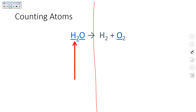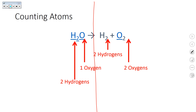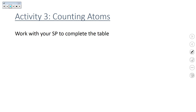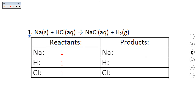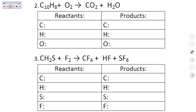For H2O: we count two hydrogens and one oxygen on the reactant side. On the product side, we have two hydrogens and two oxygens. For activity 3, go ahead and press pause on this video and complete it, then come back to check your answers. For the first equation: reactant side — one sodium, one H, one Cl. Product side — one sodium, two hydrogens, one chlorine. For number two: reactants are 10 C's, eight H's, two O's. For the products: one carbon, two H's. For the oxygens, there are two from CO2 and one from H2O, so you add them for a total of three. You add them — don't multiply — if they appear in more than one compound.